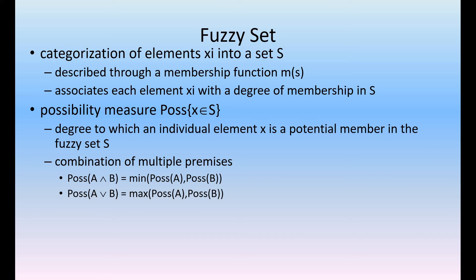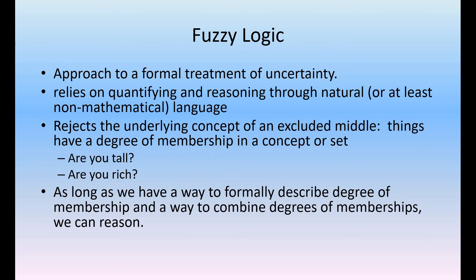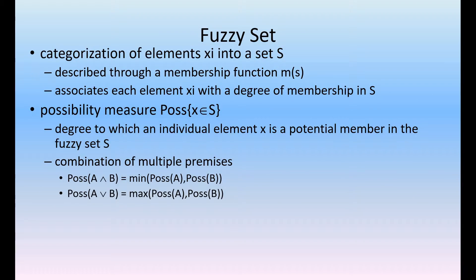The degree of membership can be described as the categorization of elements into a set. The membership function associates each element xi with a degree of membership. For example, it can be high tall, low tall, or medium tall; rich means high rich, low rich, or medium rich.